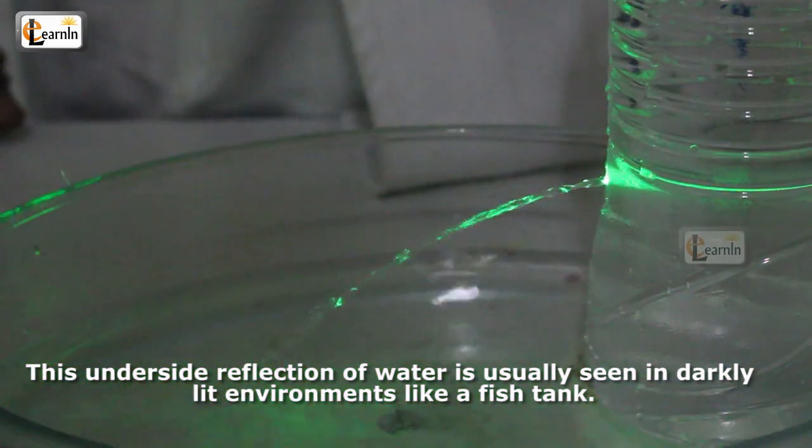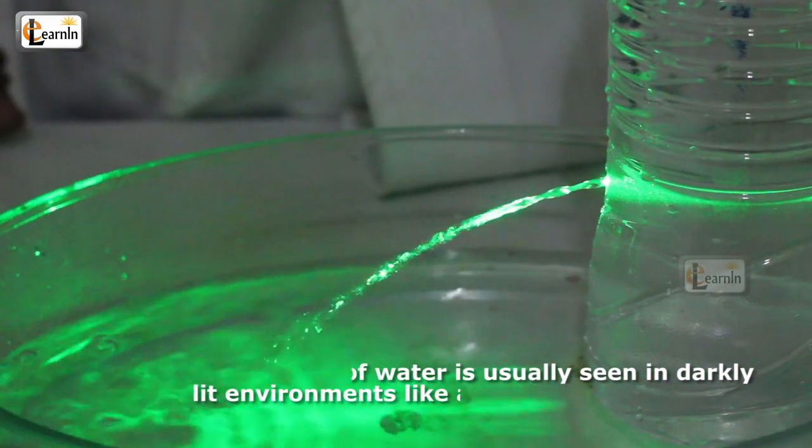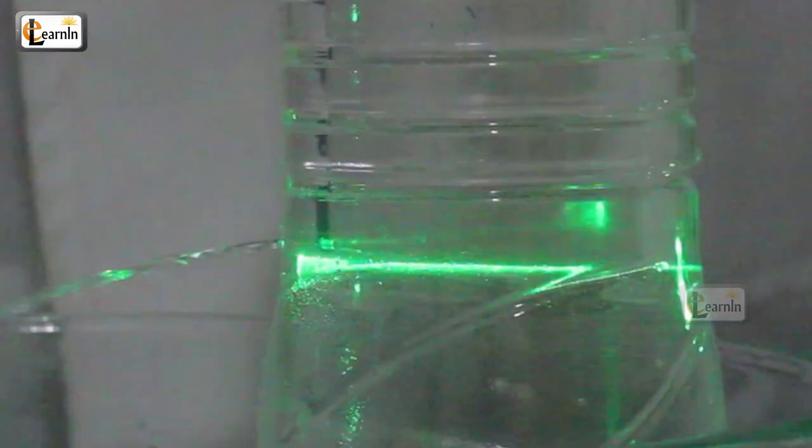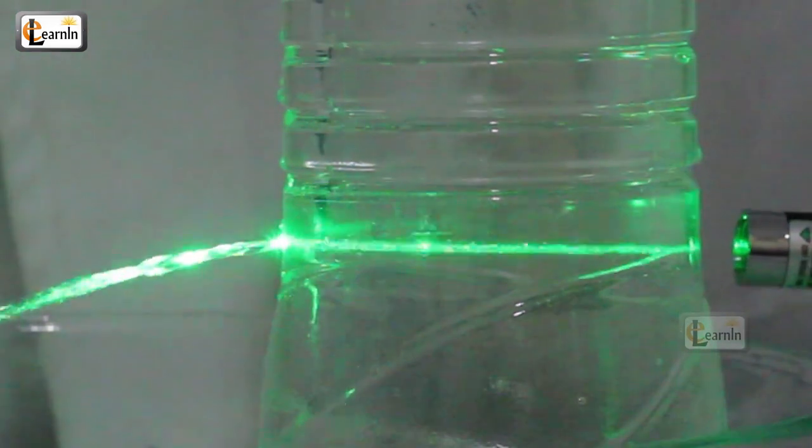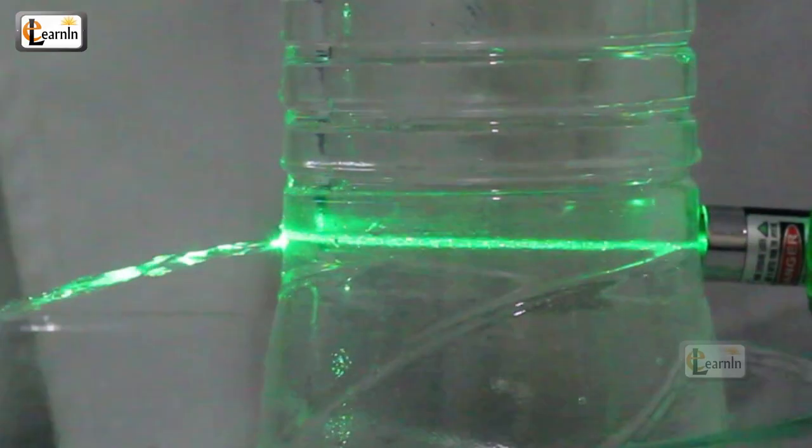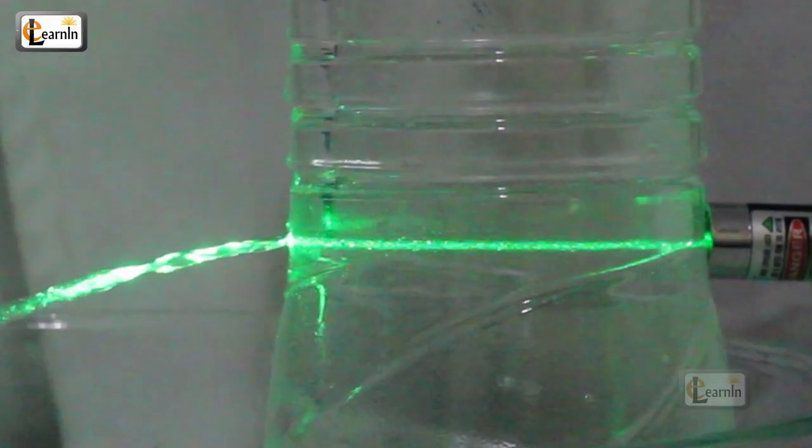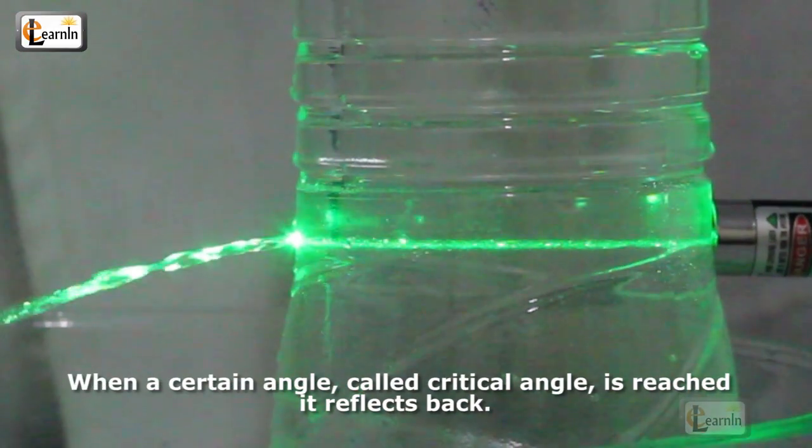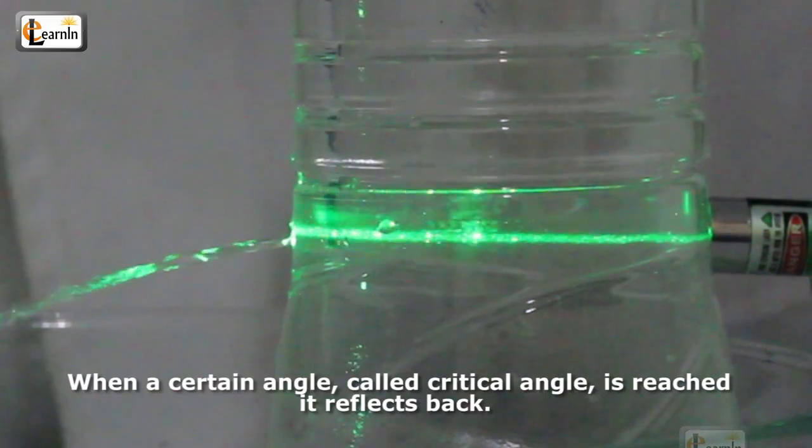When light leaves a denser material, in this case water, due to the change in speed it will change directions. However, when a certain angle called the critical angle is reached, it reflects back.